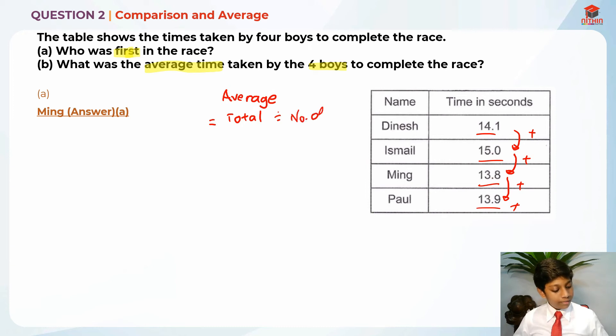The number of boys, which will give us average. So the number of boys: there's 1 boy, 2 boys, 3 boys and 4 boys. So in order to find the total, first, the total is equal to 14.1 plus 15.0 plus 13.8 plus 13.9,